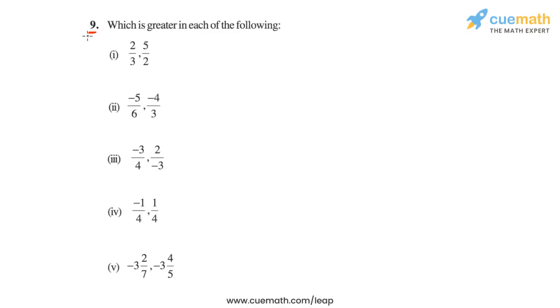In question nine, we are given these five pairs of rational numbers that you see, and we have to determine which is greater in each pair. So let's get started.